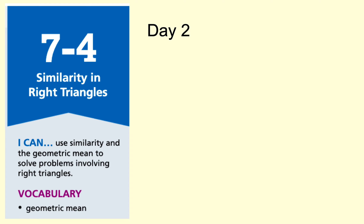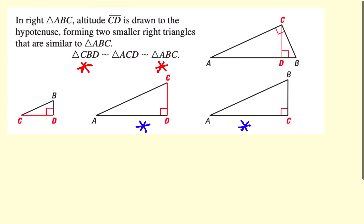Hello Gators, this is 7-4 Similarity in Right Triangles, Day 2. Let's take a look at our altitude drawn to the hypotenuse of a right triangle. Instead of comparing the small triangle and the medium triangle, we're going to compare the small triangle to the large triangle and the medium triangle to the large triangle.